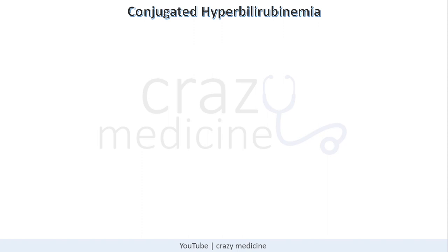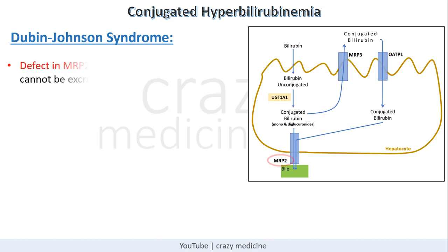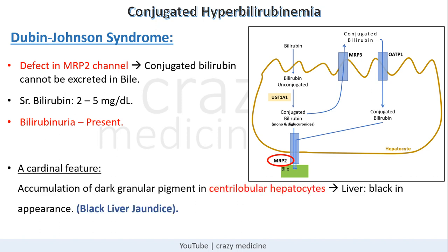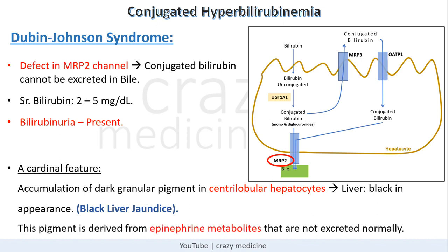Now coming to conjugated hyperbilirubinemia. First is Dubin-Johnson syndrome. There is a defect in the MRP2 channel, so conjugated bilirubin cannot be excreted into bile. Serum bilirubin remains around 2–5 mg/dL, and bilirubinuria is usually present. The cardinal feature of Dubin-Johnson syndrome is accumulation of dark granule pigment in centrilobular hepatocytes. Because bilirubin remains deposited in the liver causing excessive pigmentation, this condition is also known as black liver jaundice. This pigment is derived from epinephrine metabolites that are not excreted normally.